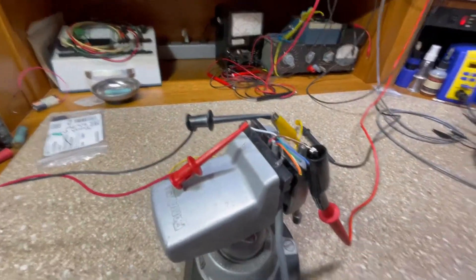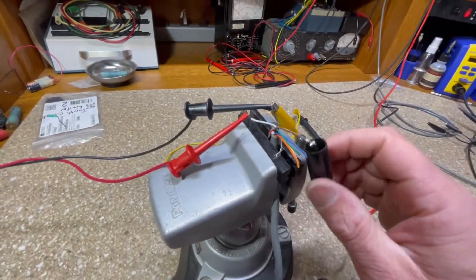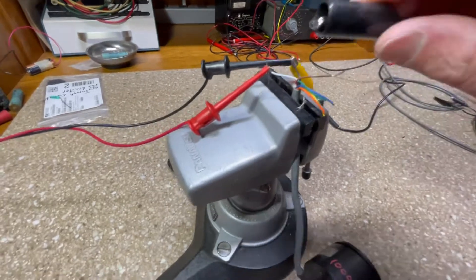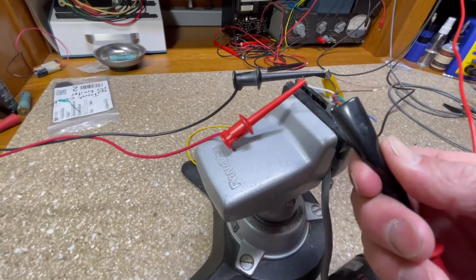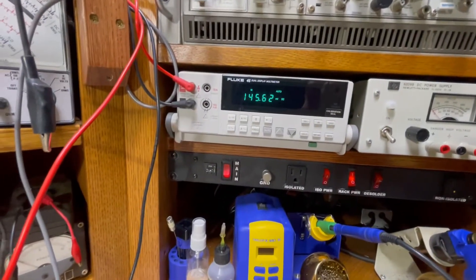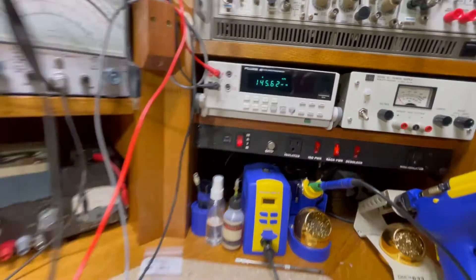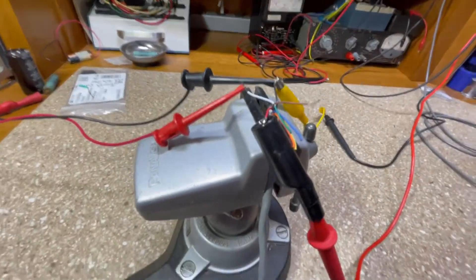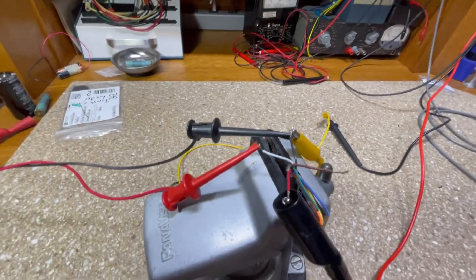4.97 volts, so my A channel should be at a low logic level. And there we go, 145 millivolts, so it is. So the A channel is working properly.